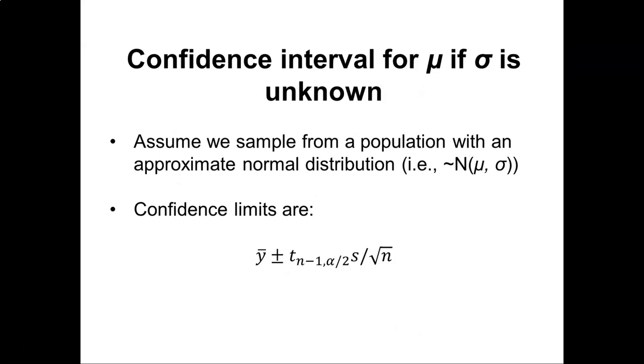We can also calculate things like a confidence interval for some value mu if we don't know what sigma is. Now assume we sample a population with an approximate normal distribution. Here's how we can calculate the confidence limits. We have our mean value y bar and because we're looking at an interval we'll have two values less than and greater than or we'll do plus and minus.